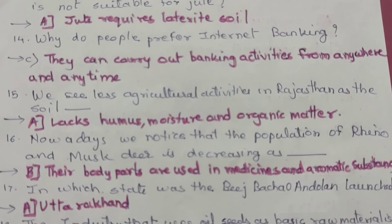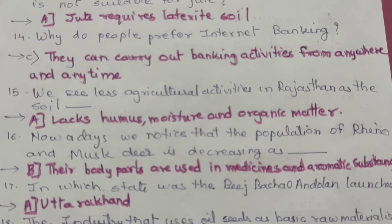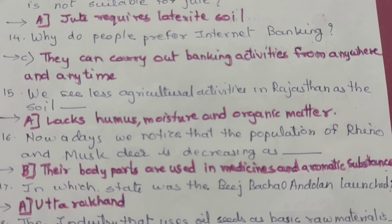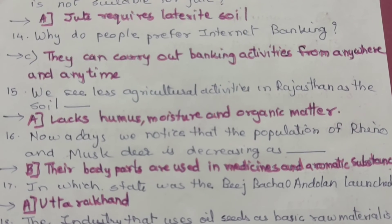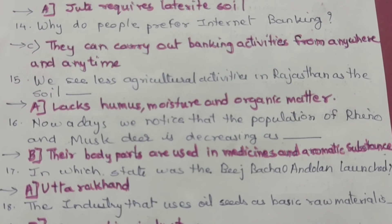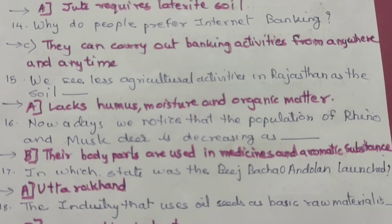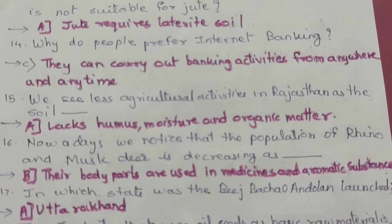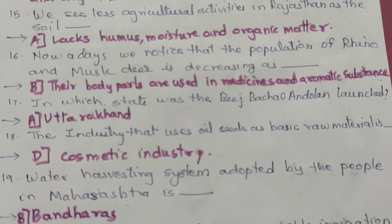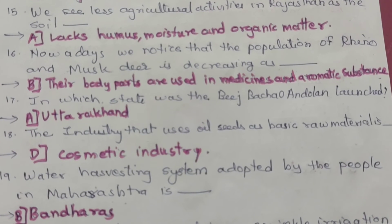Question 16: Nowadays we notice that the population of rhino and musk deer is decreasing — option B is correct — their bodily parts are used in medicines and aromatic substances. Question 18: The industry that uses oil seeds as basic raw material — the correct option is D — cosmetic industries.